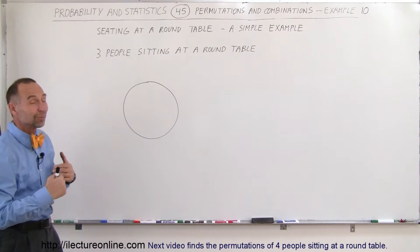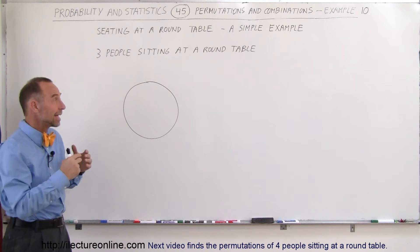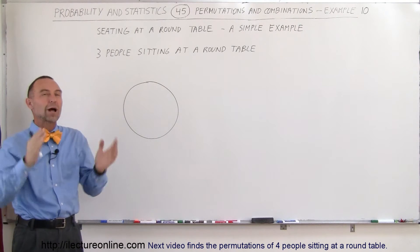Welcome to ElectronLine, and now we're going to do something different. We're going to do the number permutations you're going to have when you take a number of people and sit them around a round table.